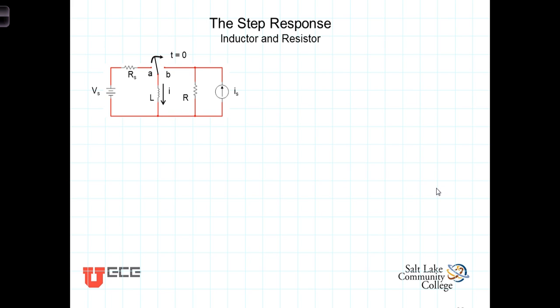In this video, we're going to consider the step response of a circuit containing a resistor and an inductor. And again, by step response, as compared to the natural response, the step response takes us from one constant current to another constant current. And the results that we're going to have will describe how that current transitions from one constant current to another constant current. So here's the story.